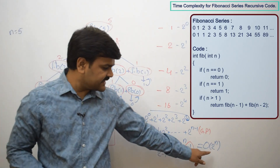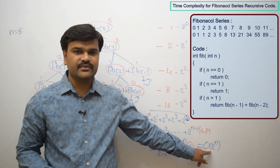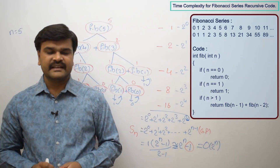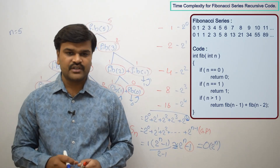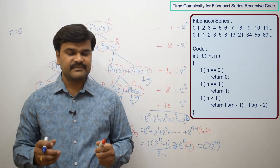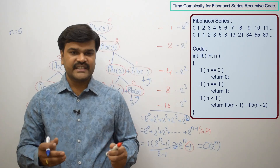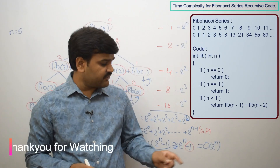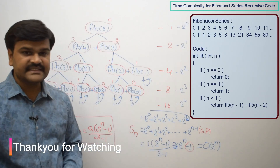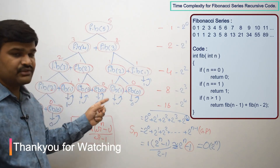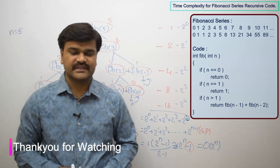Since minus 1 is a constant, we don't consider it. So we write the time complexity as O(2^n). This is the time complexity for the given Fibonacci series recursive code. In this way, we can find the time complexity very easily by using the recursive tree.